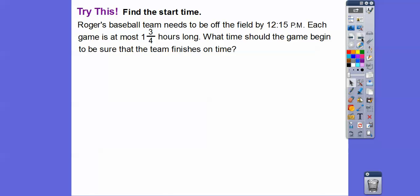Let's find the start time. Roger's baseball team needs to be off the field by 12:15. Each game is at most one and three-quarters hours long. So what time should the game begin to be sure that the team finishes on time? 1-fourth of an hour is equal to 15 minutes. So 3-fourths of an hour, if we multiply 3 times 15, or add 15 three times, gets us 45 minutes.